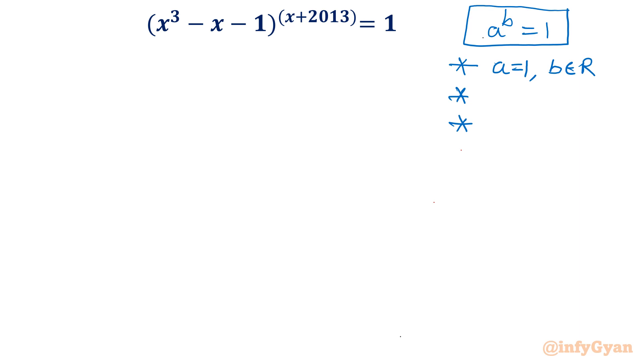Second case, if b the power is 0, at the same time a should not be equal to 0, nonzero value. Third point, a equal to negative 1, at the same time b is even. So these are three cases, three situations which I have to check for any equation which is having a power b equal to 1 form.